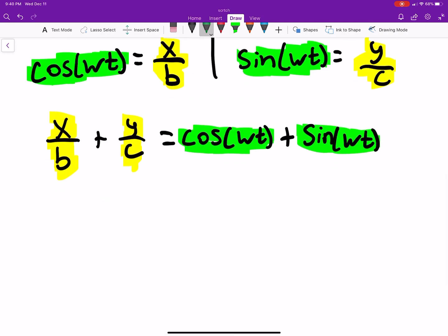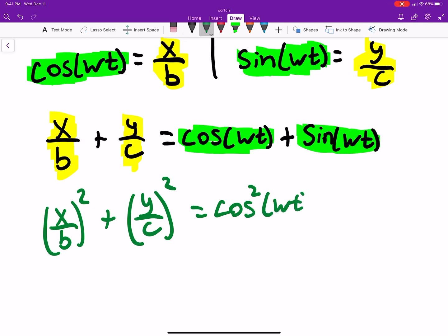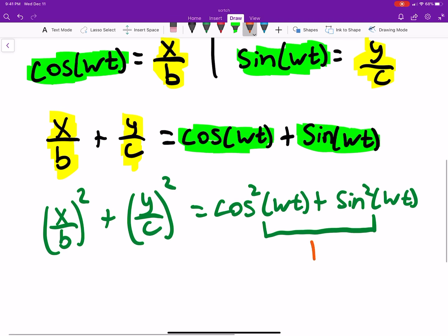Now I could square everything and say x over b squared plus y over c squared is equal to cosine of omega t squared plus sine of omega t squared. But this, you should recognize, is Pythagorean's identity, which is just equal to 1.